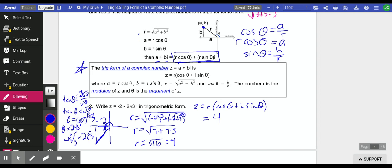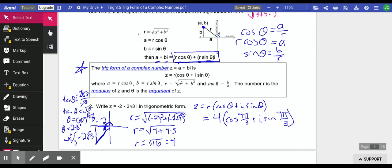To finish out our trig form, we have 4 cosine of 4 pi over 3 plus i sine of 4 pi over 3. We will do another example in the next video.